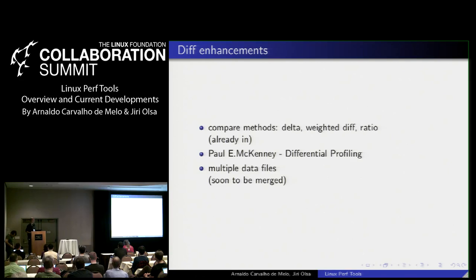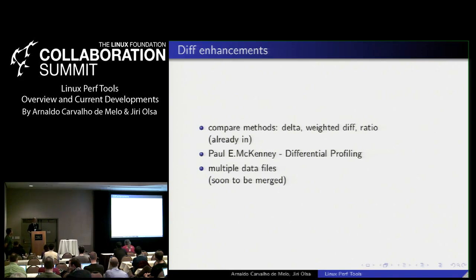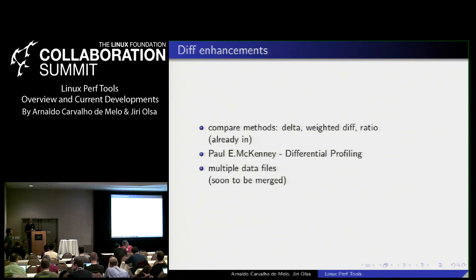The next topic is perf diff, which compares data files gathered from the record command. Until now we had only a simple comparison method using delta computation. What was added is weighted diff and ratio computation, based on a paper by Paul McKenney on differential profiling. The other enhancement is that perf diff can now compare multiple data files, whereas before it only handled two.